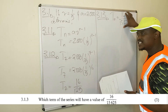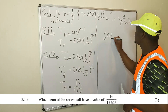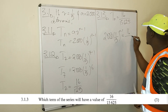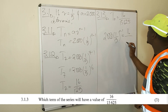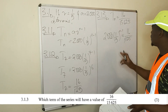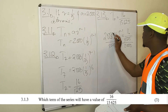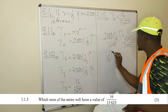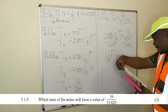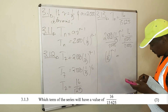We know Tₙ = 2000 × (1/5)^(n−1), and we set this equal to 16/15,625. We divide both sides by 2000, so the 2000 cancels, giving us (1/5)^(n−1) = (16/15,625) ÷ 2000.